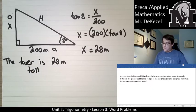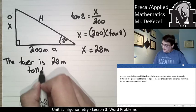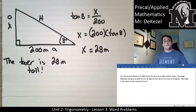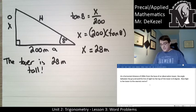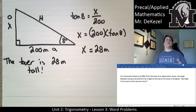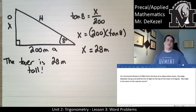Let's finish with a sentence: the tower is 28 meters tall. We took the information from the problem, drew our diagram systematically, then used what we knew to find what we wanted to know.